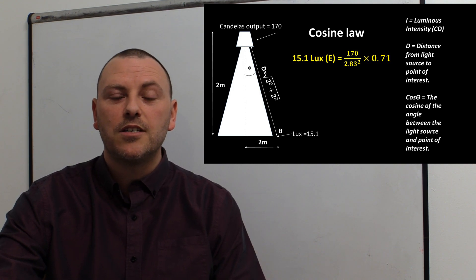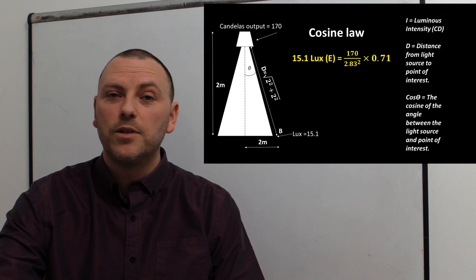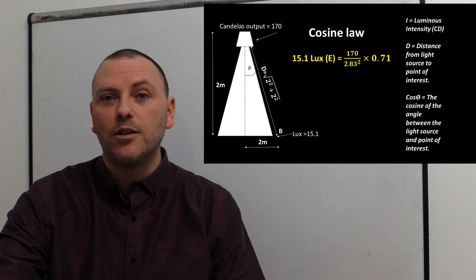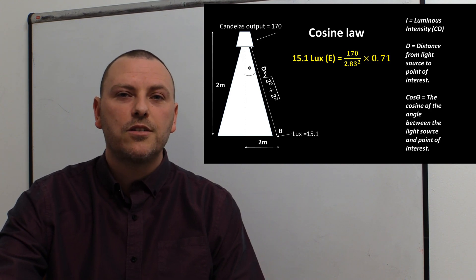It will always be cosine theta, it will always be the height divided by the hypotenuse, so you can start to build up that pattern and get used to this. And there we go, cosine law also done. Thank you.